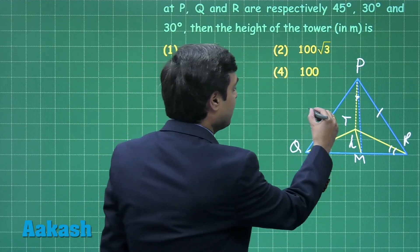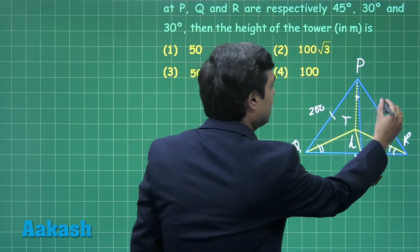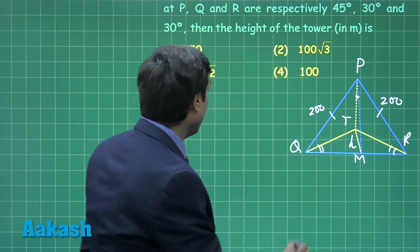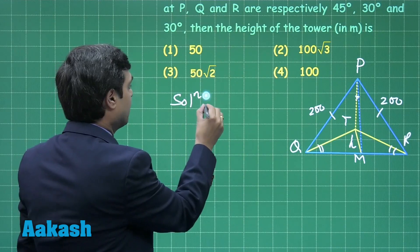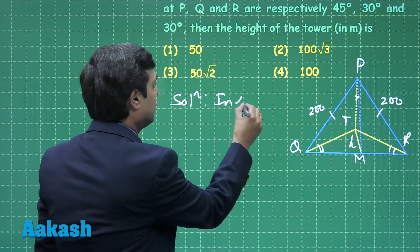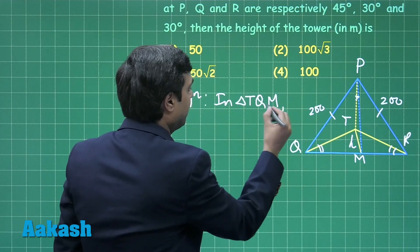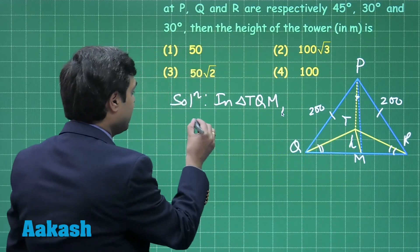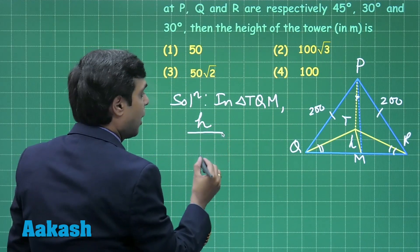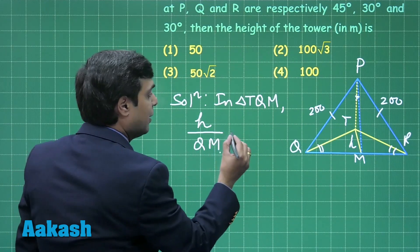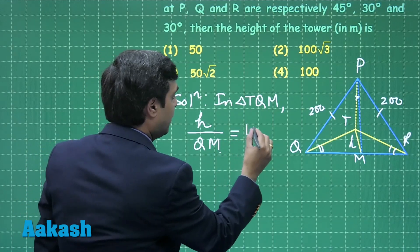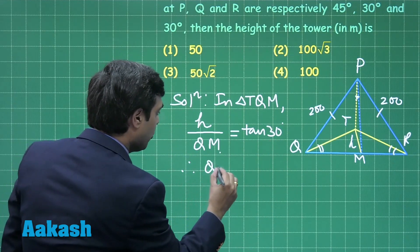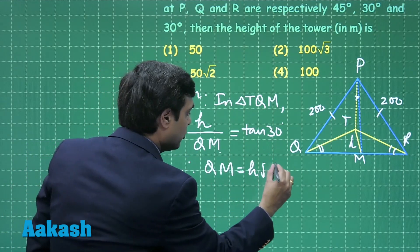PQ equals PR equals 200 meters. Now considering triangle TQM: since the angle at Q is 30 degrees, we have h upon QM equals tan 30 degrees, giving us QM equals h root 3.